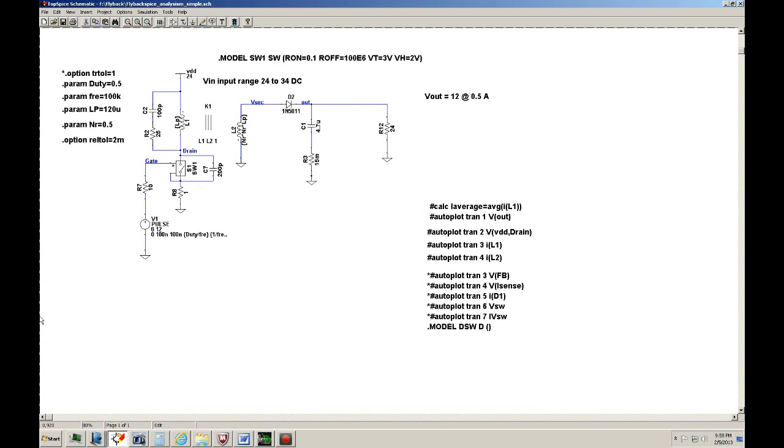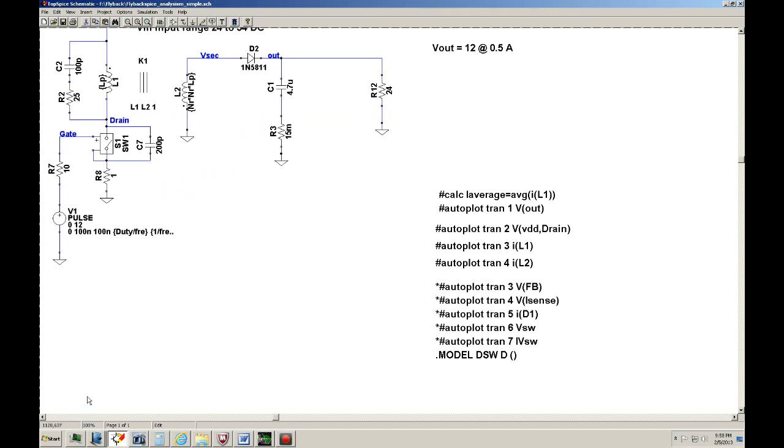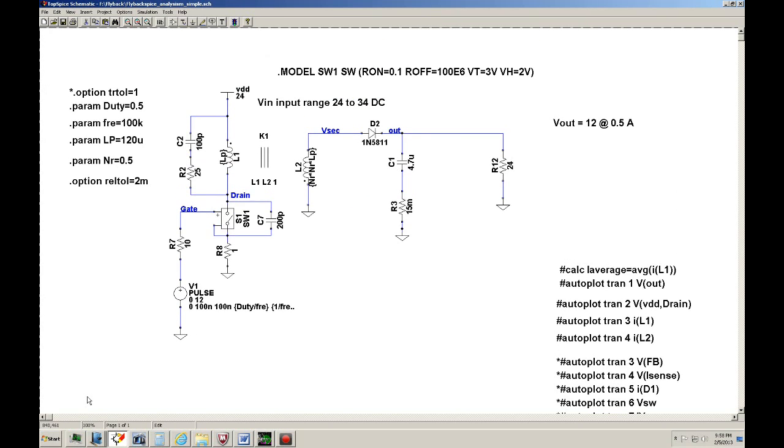So we'll go ahead and simulate it. And what I'm doing here is, let me go ahead and explain a little bit. I have some of my labels here. Here's the label. I know that my load is going to be 24 ohms. And I use a capacitor of 4.7 microfarads with the ESR of 15 milliohms, and I'm using a 1N5811 diode.